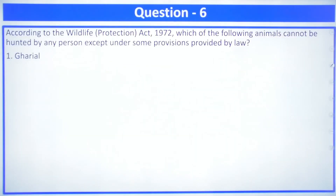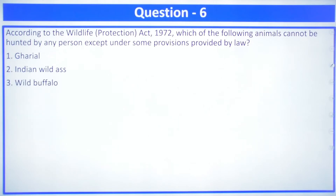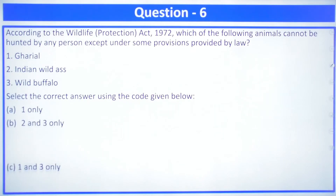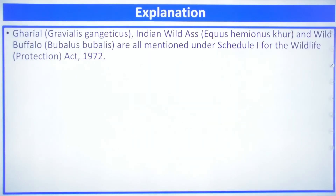Question number 6: according to the Wildlife Protection Act of 1972, which of the following animals cannot be hunted by any person except under some provisions provided by law? The animals asked about are: first, gharial; second, Indian wild ass; third, wild buffalo. The answer is D — one, two and three — because all three are protected and are found in Schedule 1 and 2 of the WPA, due to which you cannot kill them. For example, gharial is in Schedule 1.